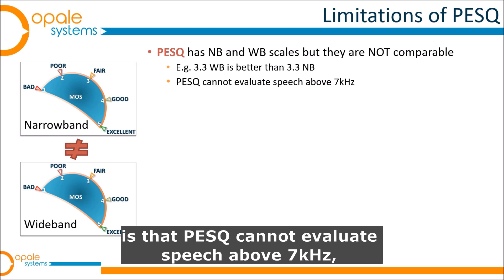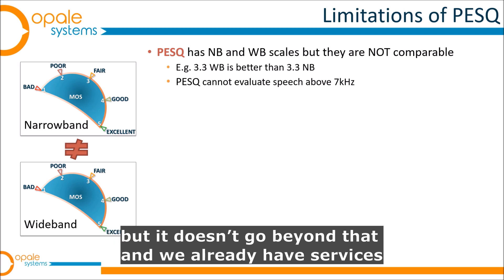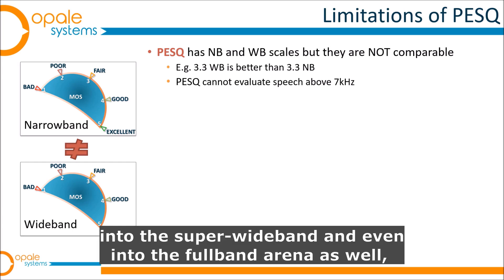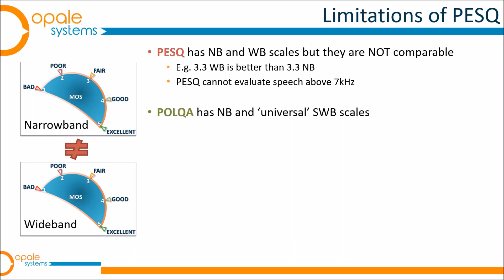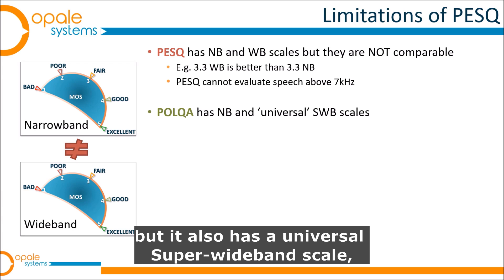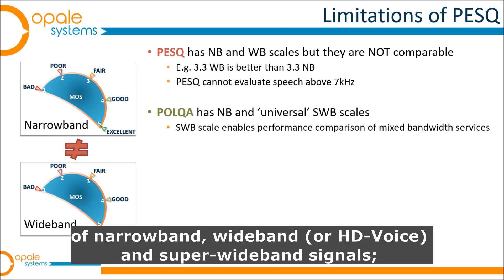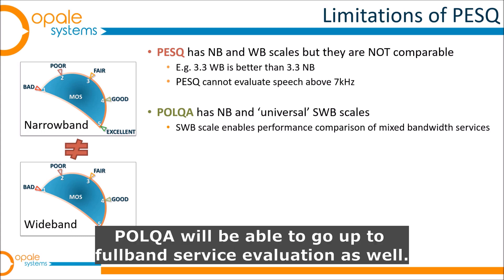A second limitation is that PESQ cannot evaluate speech above 7 kHz. Seven kilohertz takes us to the top of the HD Voice or wide band speech spectrum, but doesn't go beyond. We already have services — Skype is a good example — and cellular services are moving up beyond that into super wide band and even full band. POLQA, by contrast, has a narrow band scale but also a universal super wide band scale. By 'universal' I mean it can compare the performance of narrow band, wide band or HD Voice, and super wide band signals. In the next evolution, POLQA will also be able to go up to full band service evaluation.